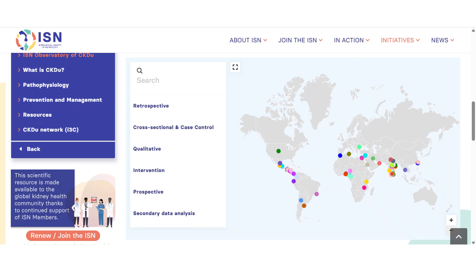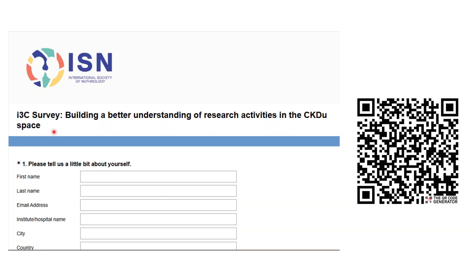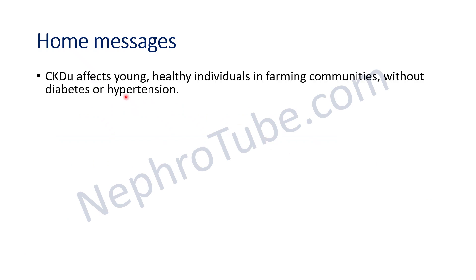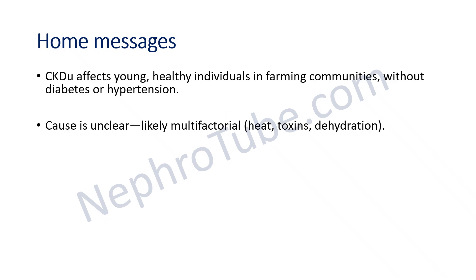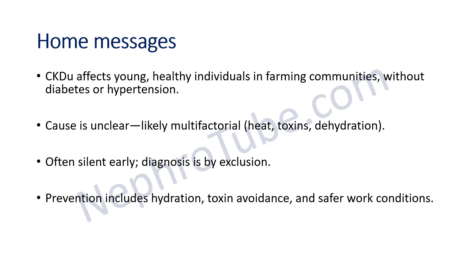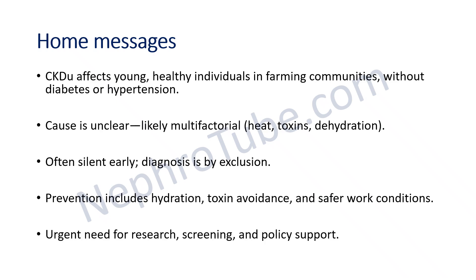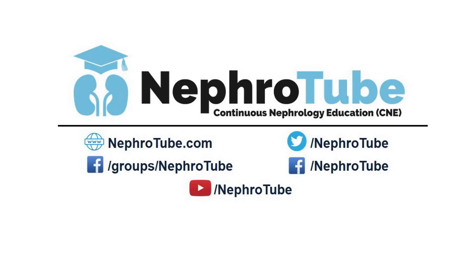Many research studies are ongoing worldwide. The International Society of Nephrology has a survey for building better understanding of research activity in CKDU, accessible via a QR code. Take-home messages: CKDU affects young healthy individuals in farming communities without diabetes or hypertension; the cause is likely multifactorial and often silent; early diagnosis is by exclusion; prevention includes hydration, toxin avoidance, and safer work conditions; and there is an urgent need for research, screening, and policy support.